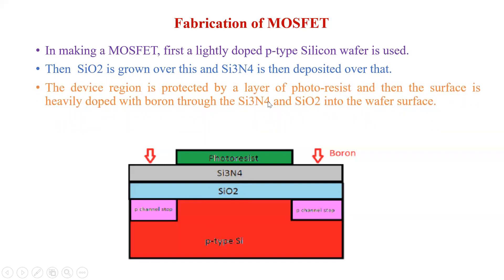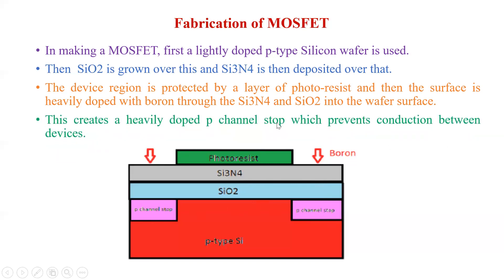The third step is that the device region is protected by a layer of photoresist, as you can see here. Then the surface is heavily doped with boron through the Si₃N₄ and SiO₂ into the wafer surface. Boron is a p-type semiconductor, so boron is being doped through Si₃N₄ and SiO₂ to form highly doped p-type layers — shown in pink here. This creates a heavily doped p-channel stop, which prevents conduction between the devices.